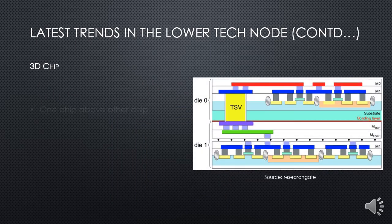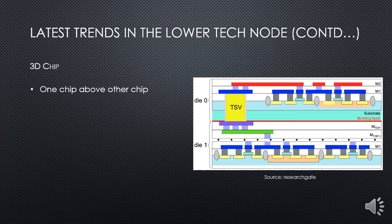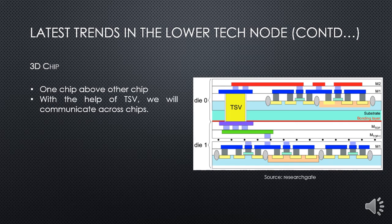The next trend is the 3D chip. Most of the time, we may need multiple processors on a motherboard that need to communicate with each other. Instead of having two different processors on a motherboard communicating through the board, why not have one chip on top of the other — a 3D architecture? Communication between the chips can be enabled using TSV, which stands for Through Silicon Via.